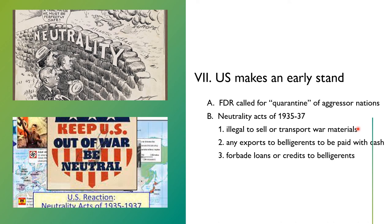But any other exports — whether cotton, wheat, or whatever — the belligerents had to pay for with cash. And the Neutrality Act of 1937 made it illegal to give loans or credits to any of the belligerents, which included Britain and France.